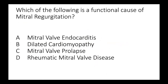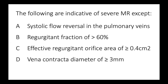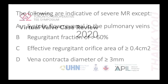Two MCQs: First, which of the following is a functional cause of mitral regurgitation? Is it mitral valve endocarditis, dilated cardiomyopathy, mitral valve prolapse, or rheumatic mitral valve disease? The answer should have become clear throughout this presentation. Second, the following are indications of severe MR except: systolic flow reversal in the pulmonary veins, regurgitation fraction greater than 60%, EROA greater than or equal to 0.4 centimeters squared, or vena contracta diameter greater than or equal to three millimeters.